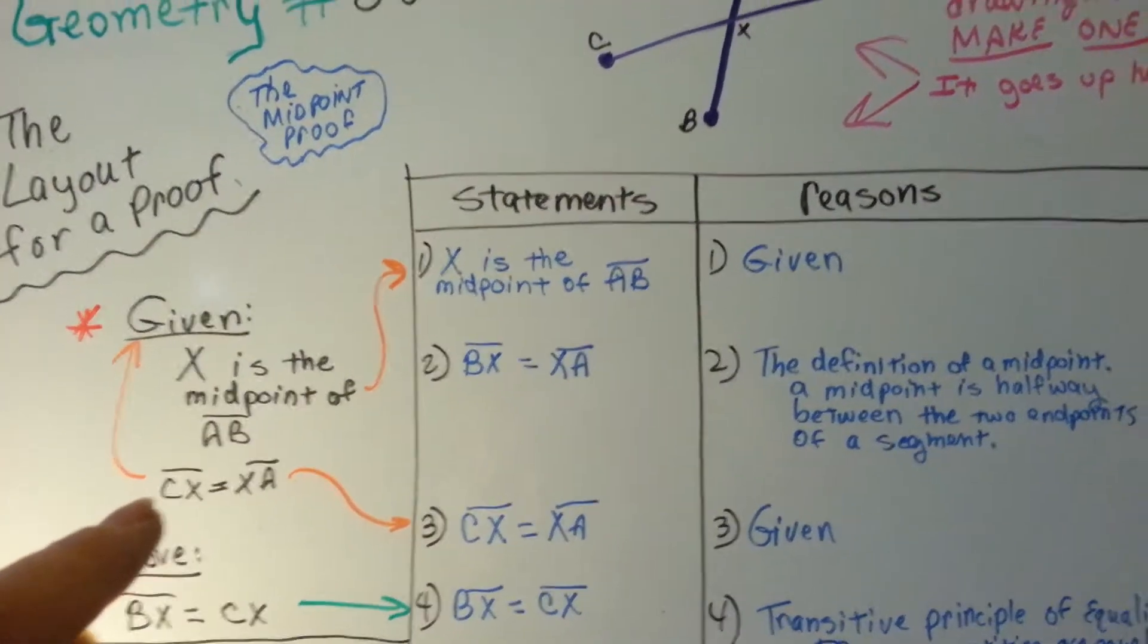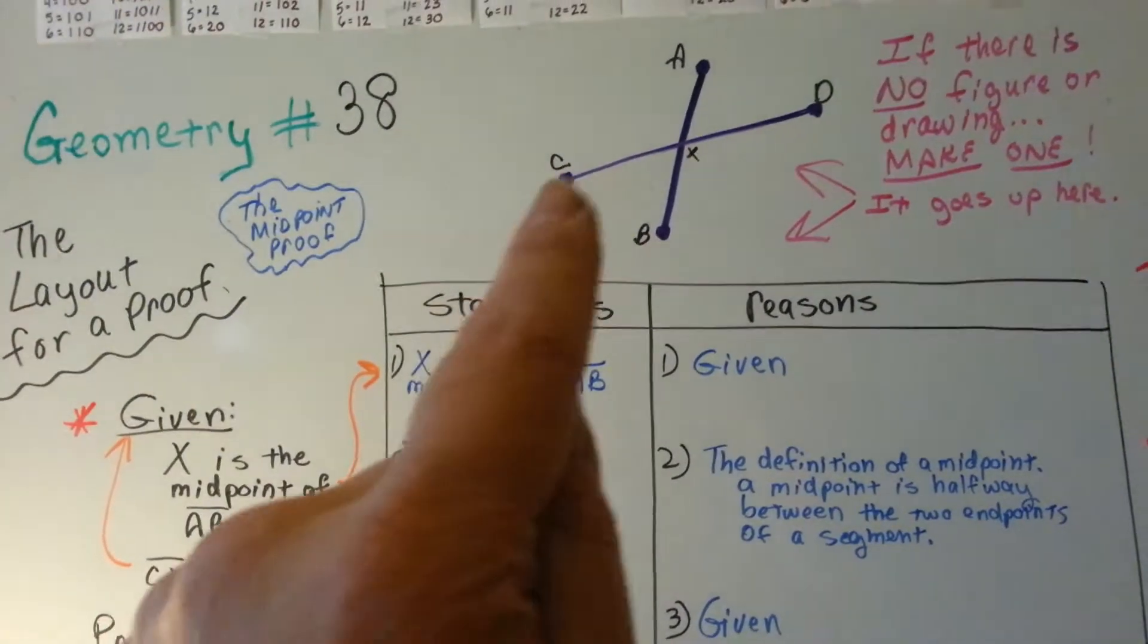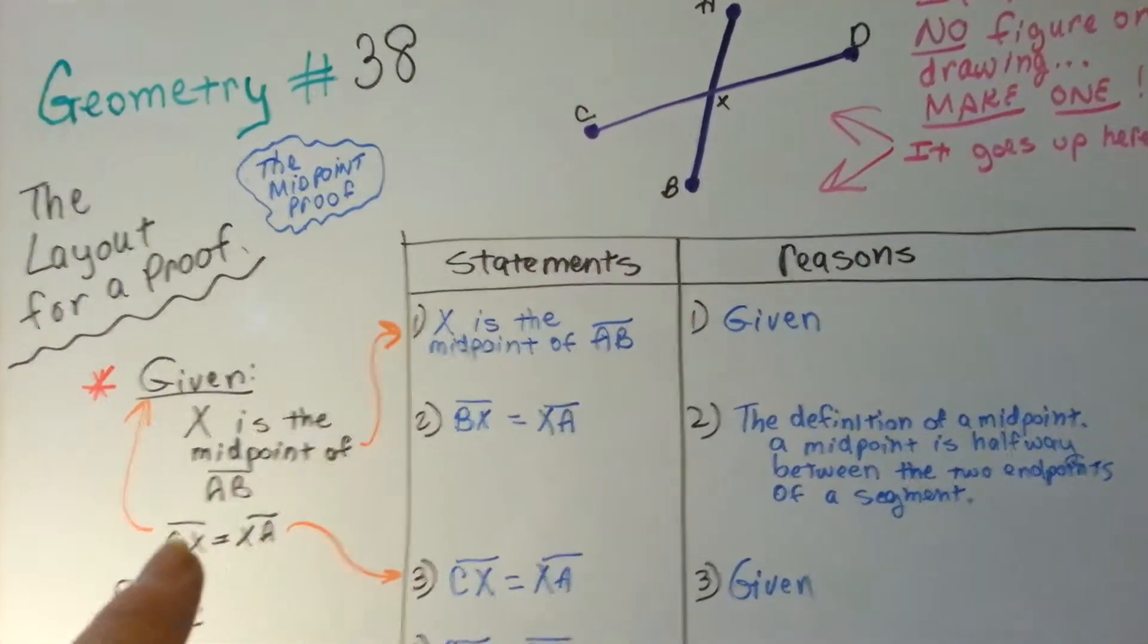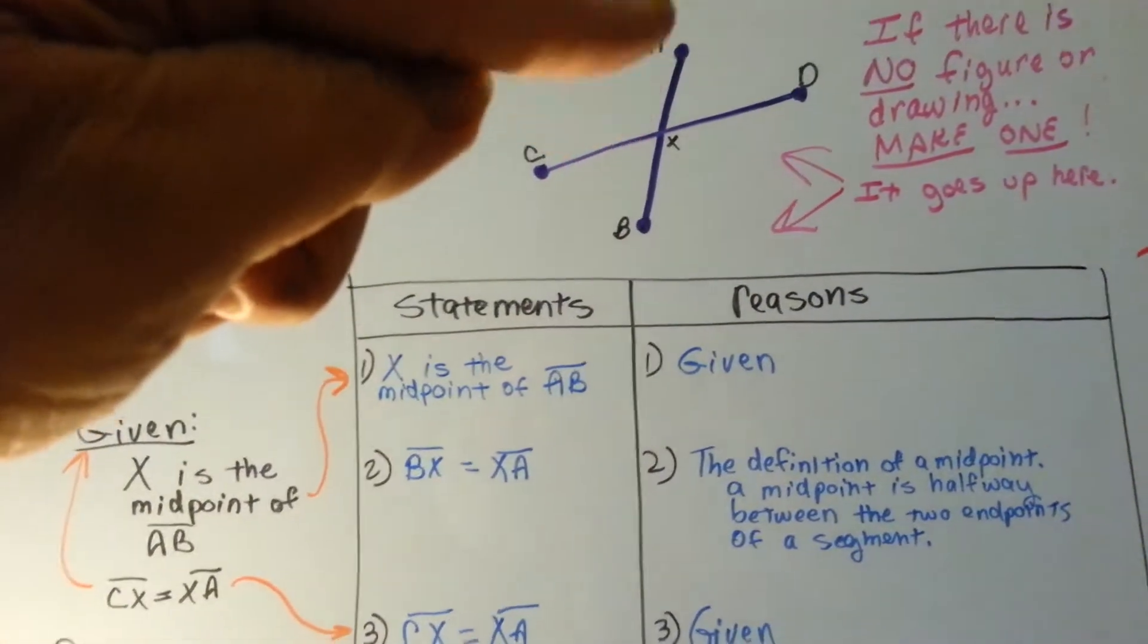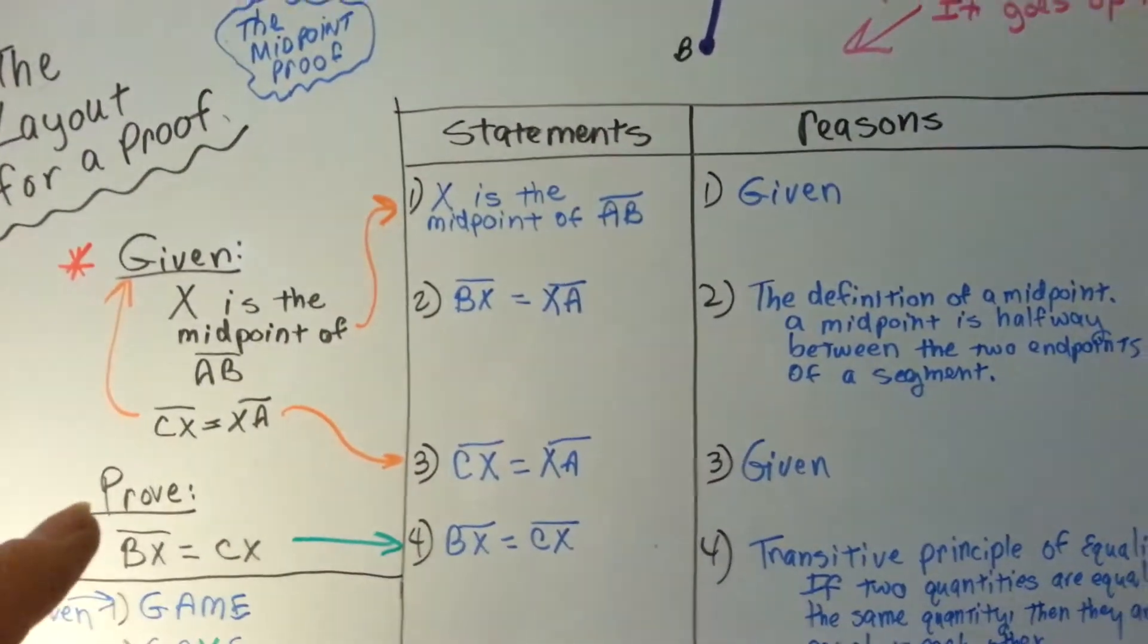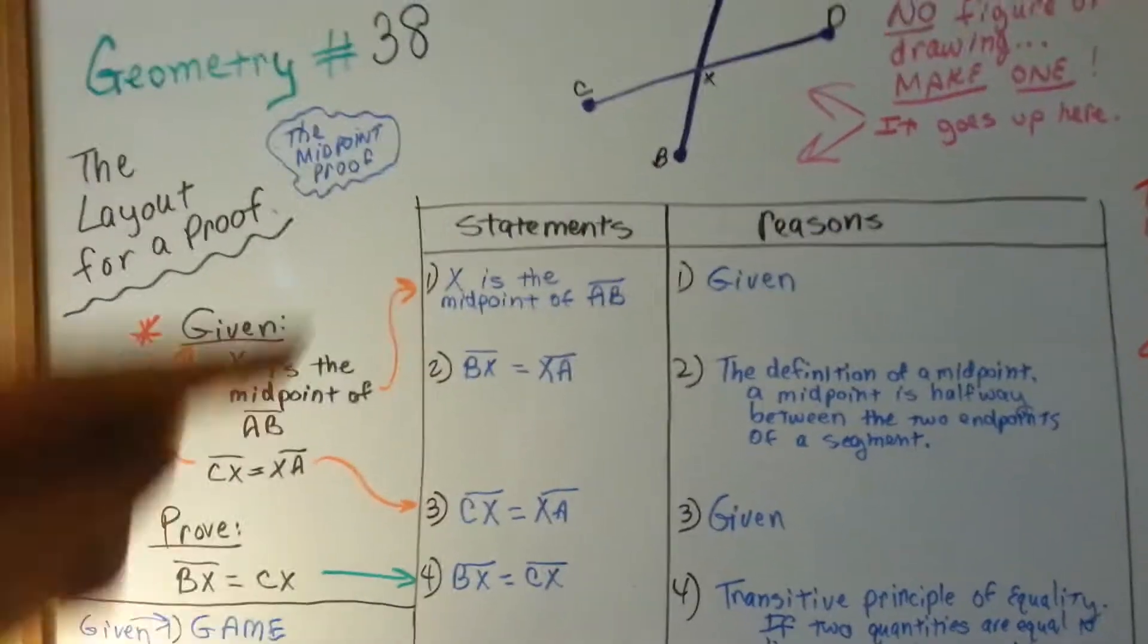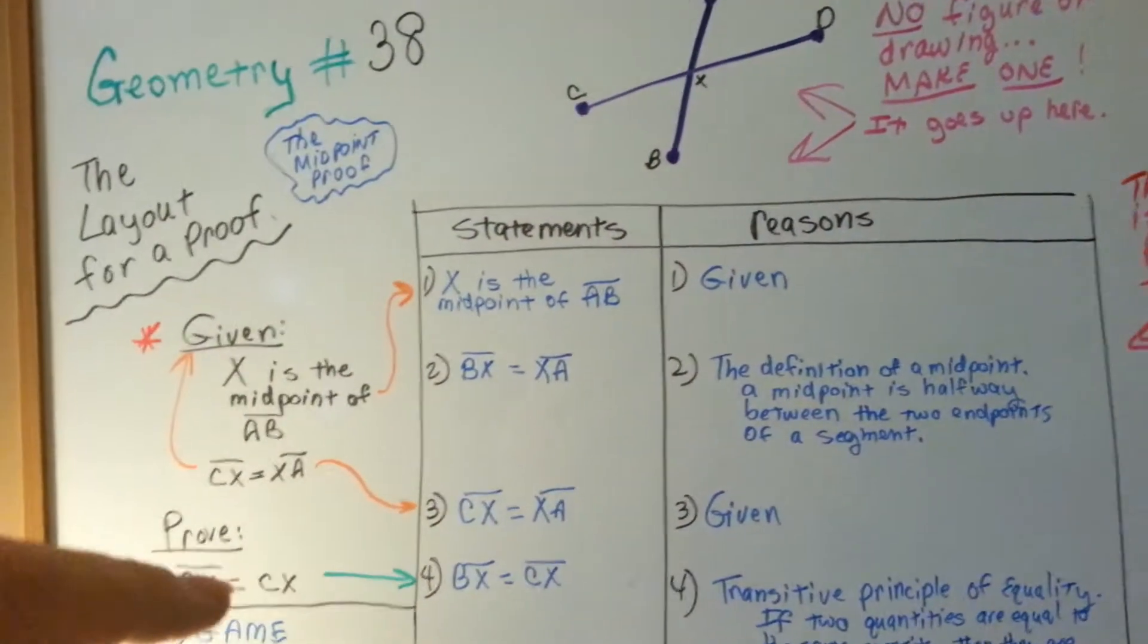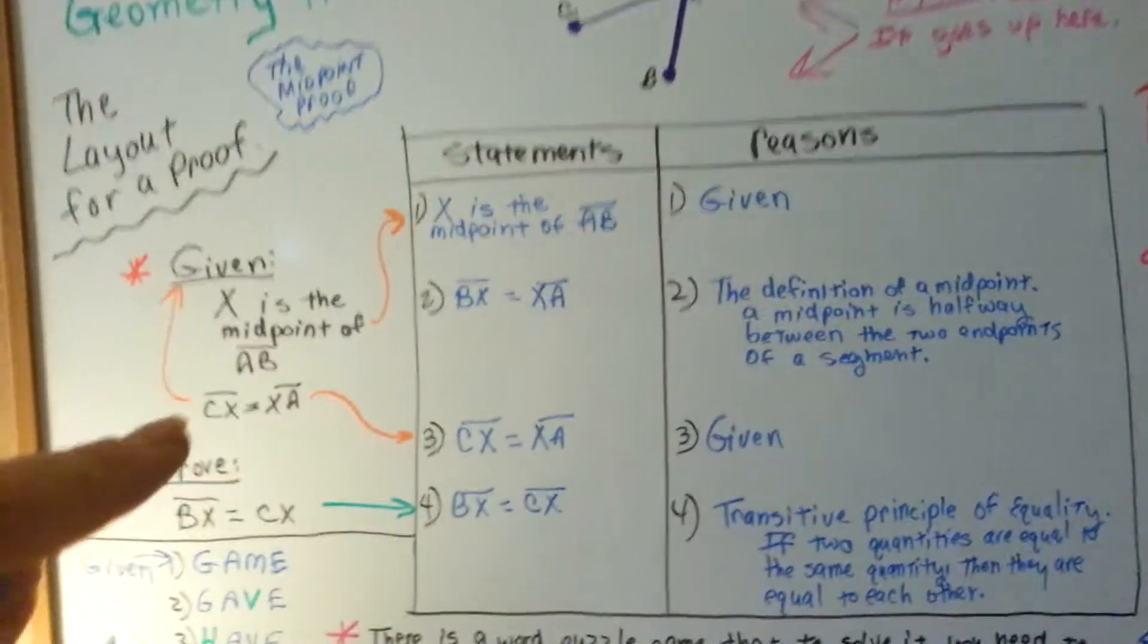And that segment Cx, Cx, right here, is equal to xA, is equal to this one. We have to prove that Bx, this down here, is equal to Cx.